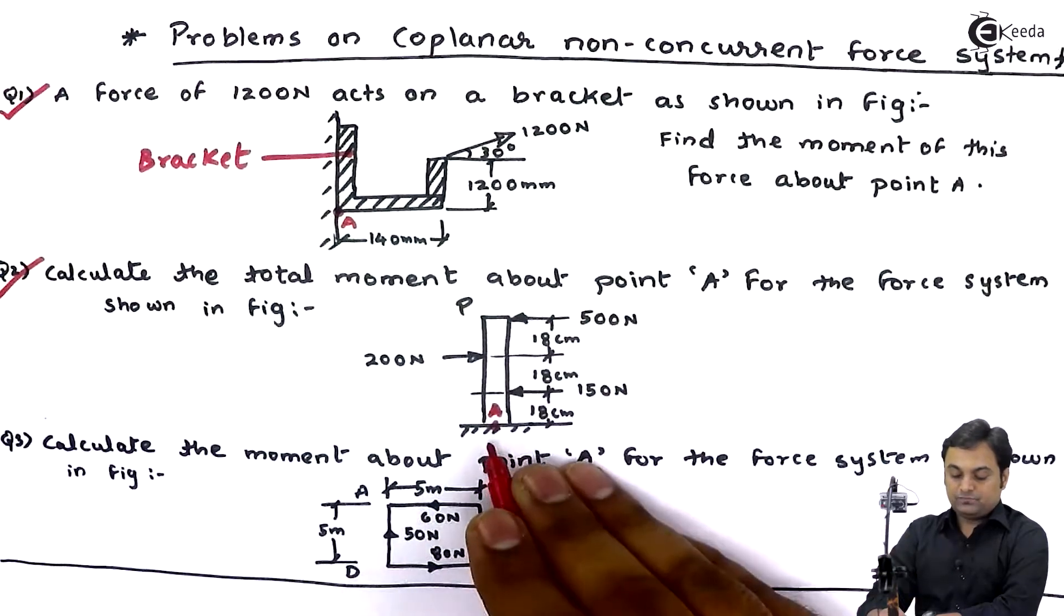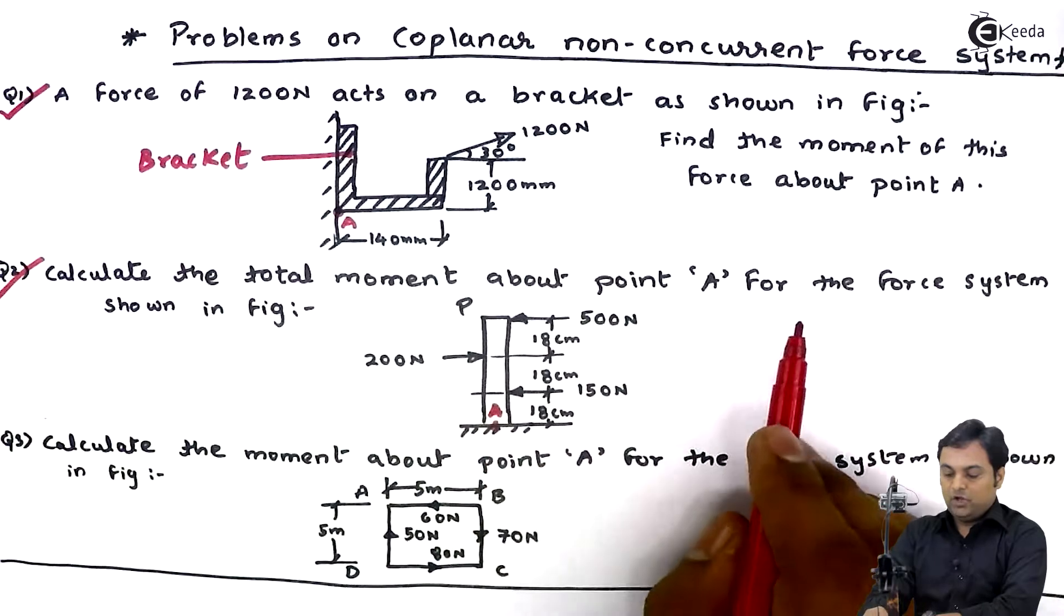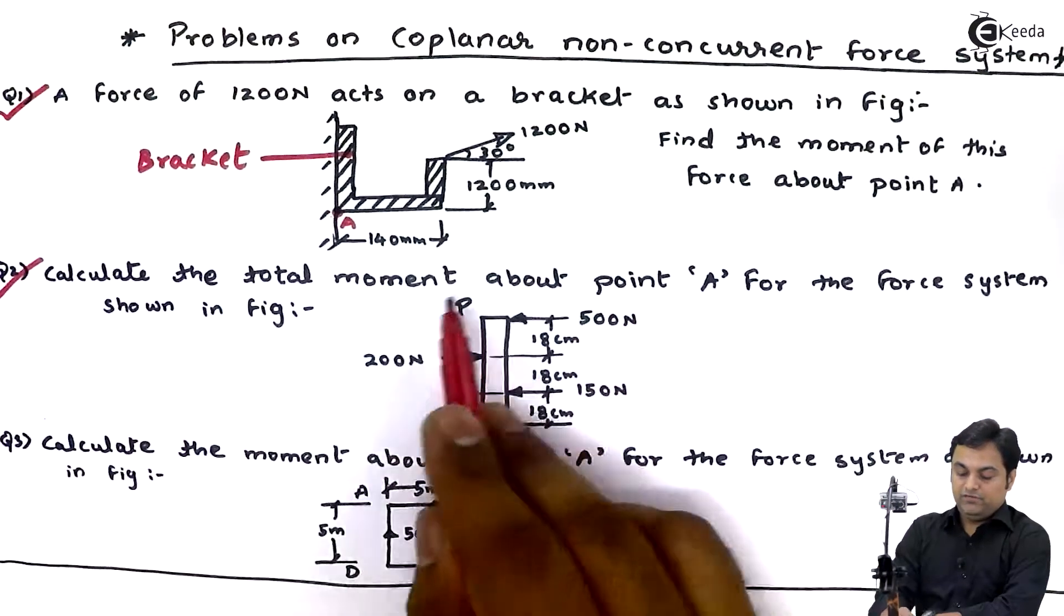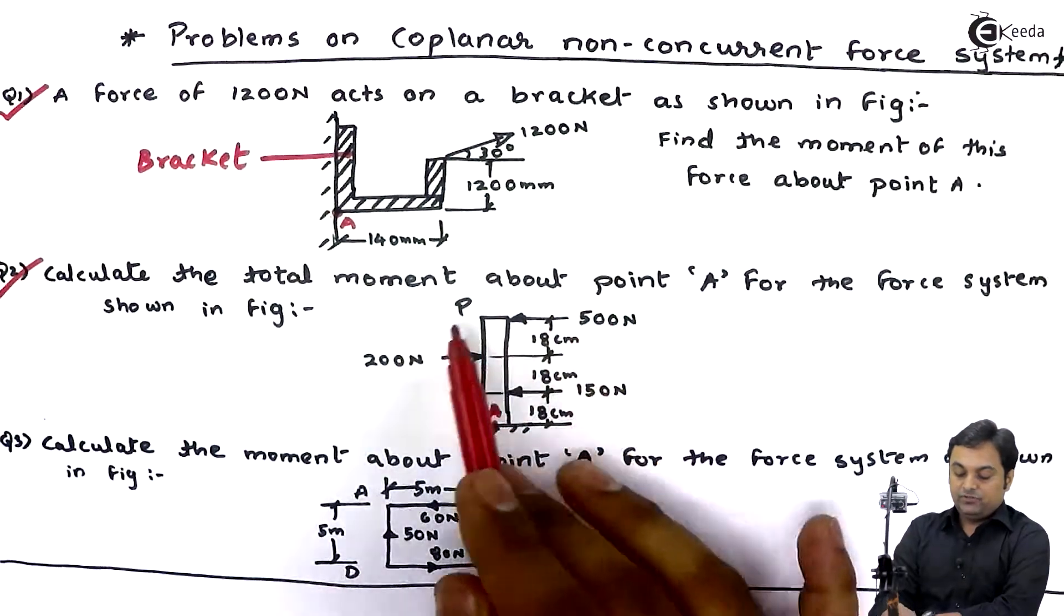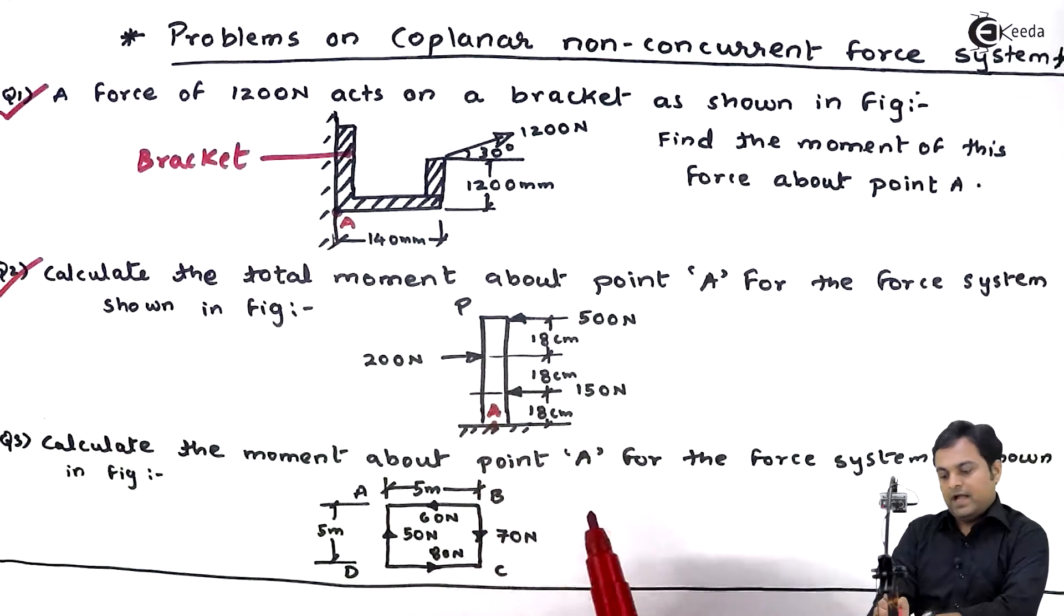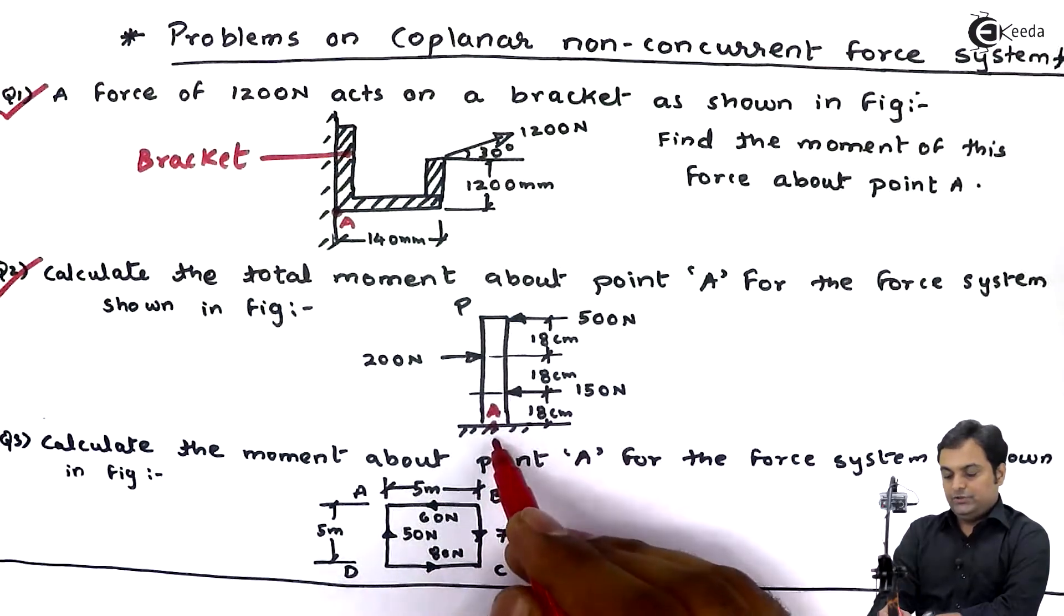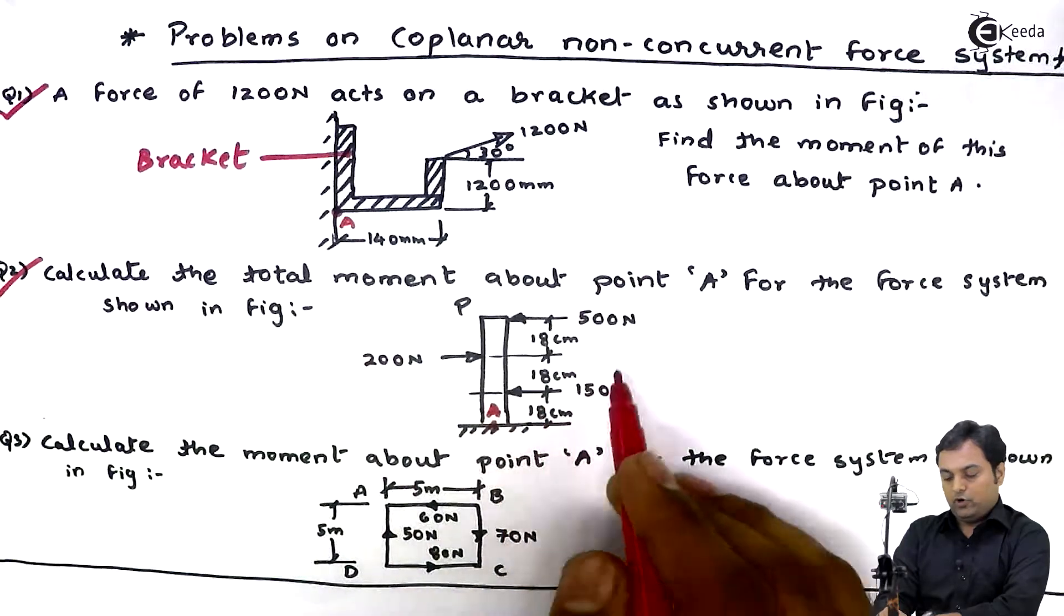Point A which is shown in red here for the force system as shown in the figure. They have given you some system of forces and with the help of these system of forces you need to calculate moment of all forces about point A.